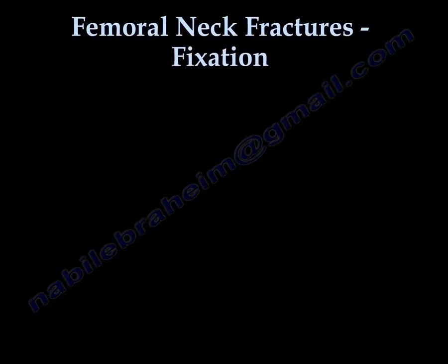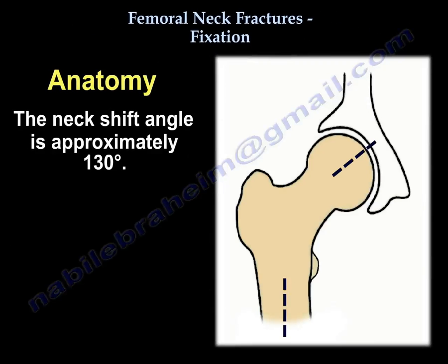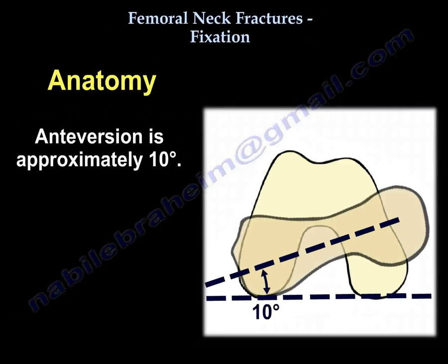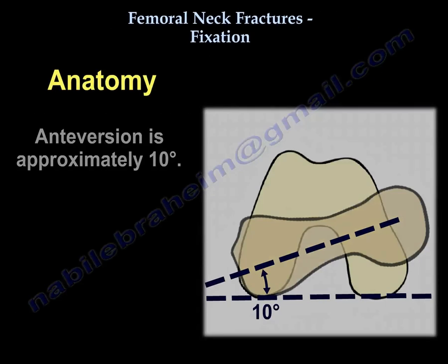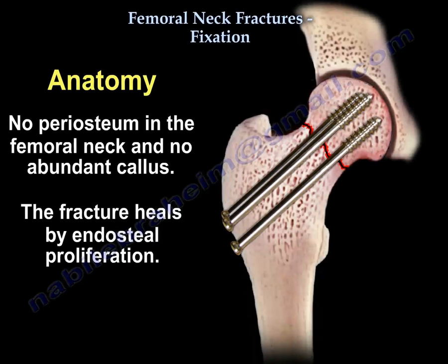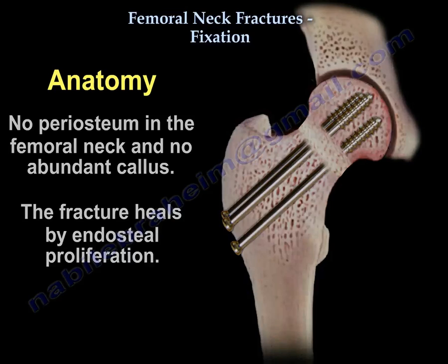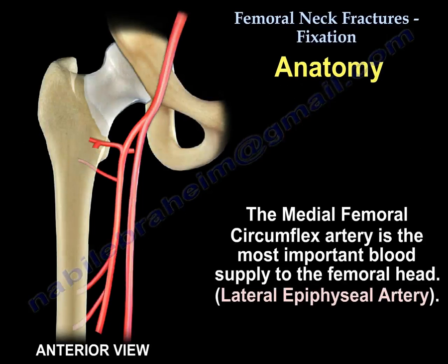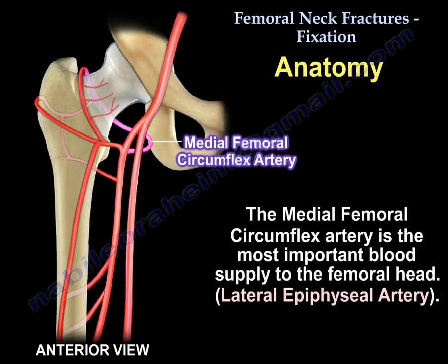Femoral Neck Fracture Fixation Anatomy: The neck shaft angle is approximately 130 degrees, and the anteversion is approximately 10 degrees. There is no periosteum in the neck, no abundant callus, and the fracture heals by endosteal proliferation. The medial femoral circumflex artery is the most important blood supply to the femoral head, via the lateral epiphyseal artery.